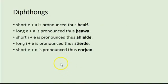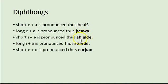Old English also has a series of diphthongs. Short EA is pronounced 'half' — remember a diphthong is a combination of two vowel sounds that glide into each other. Long ĒA is pronounced 'þēoda.' Short IE is pronounced 'hield,' 'āhielda.' You basically pronounce every vowel in Old English. Long ĪE is pronounced 'stīerde.' Short EO is pronounced 'eorþon' — this is a common diphthong in Old English that no longer exists in Modern English.